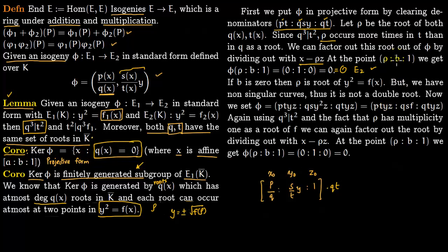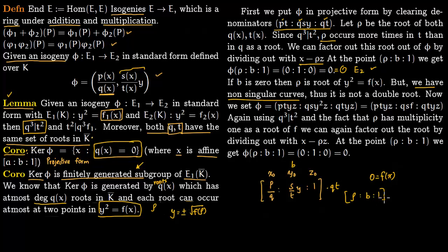The second case is when b equals zero, meaning the Y component is zero. Plugging Y equals 0 into the curve equation gives 0 equals F(rho), so rho is a root of F1. Since E1 is non-singular, rho cannot be a double root of F1. So the point (rho : 0 : 1) lies on the curve, with rho corresponding to X and b equals zero corresponding to Y.